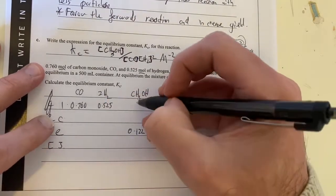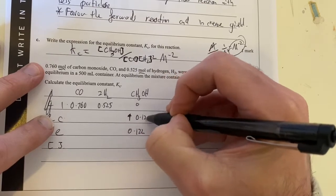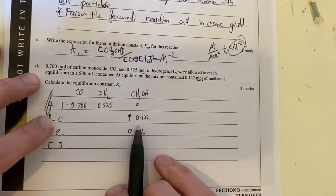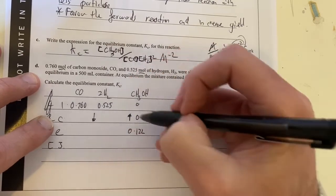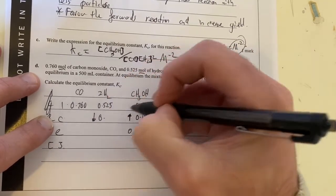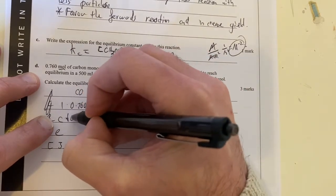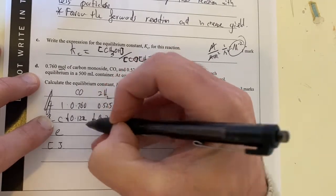What does that mean? My change, I know that this was 0 to start off with, so this increased by 0.122. So therefore, what that means is this must have decreased by twice as much. Our change is in our ratio. This would have gone down by 0.244. This must have gone down by 0.122, because it's a one-to-one ratio of these two.